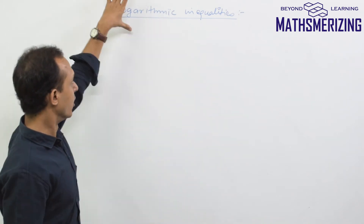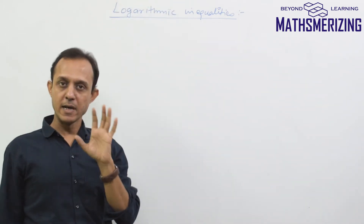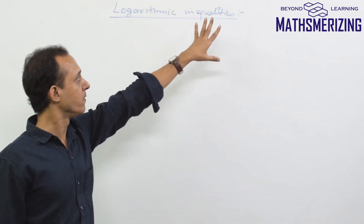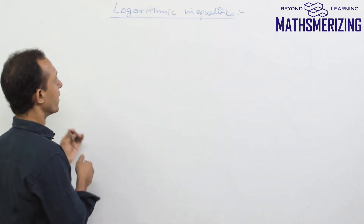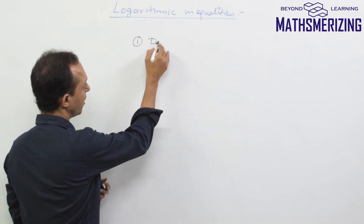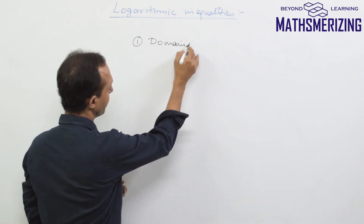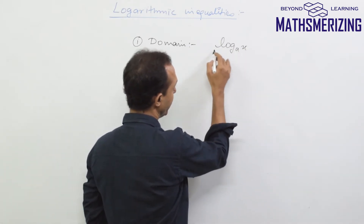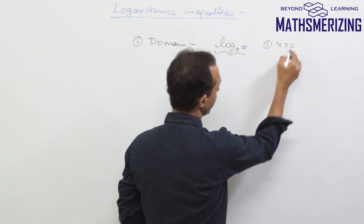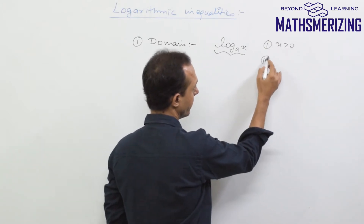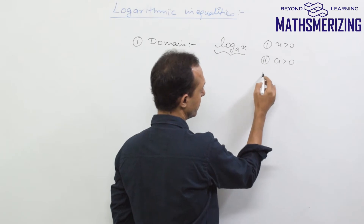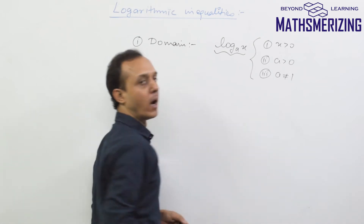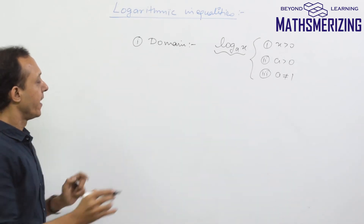In this lecture we will discuss logarithmic inequalities. Logarithmic inequalities are simple — there are just two steps to follow. Step one: we must always take care of the domain. For any log, the conditions for the domain are x should be greater than zero, base should be greater than zero, and base is not equal to one.